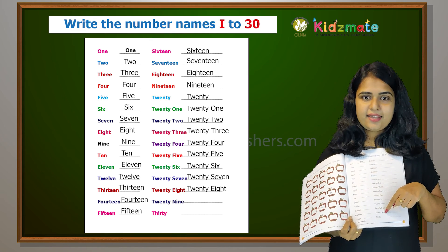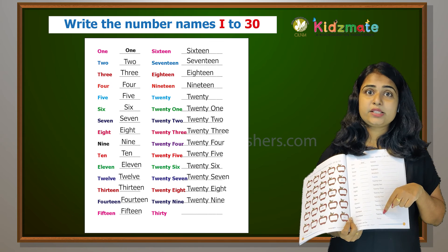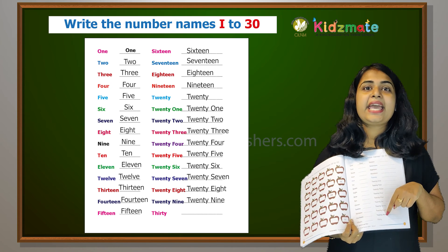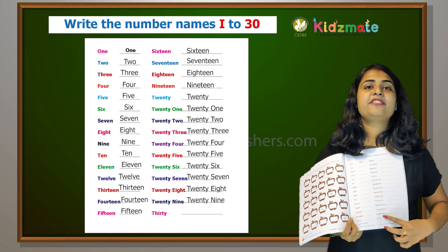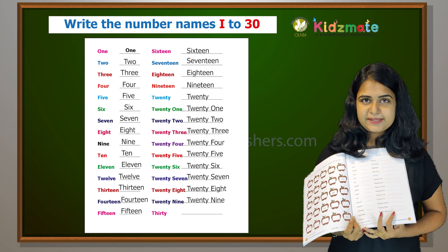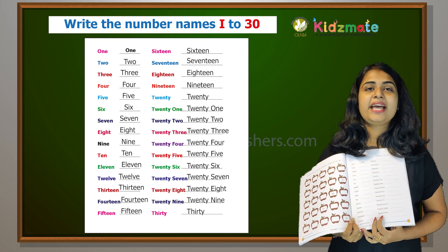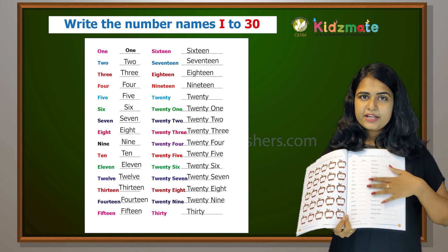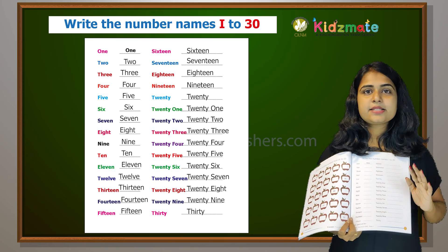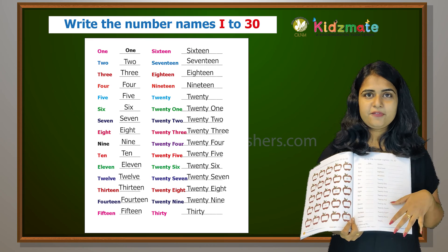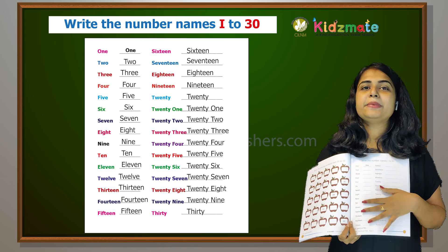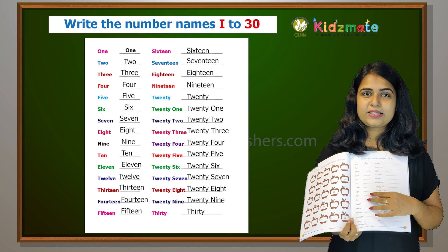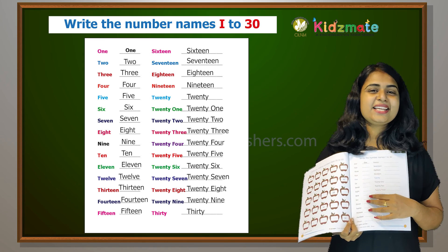Then twenty-nine, T-W-E-N-T-Y and N-I-N-E, twenty-nine. And then finally, thirty, the spelling is T-H-I-R-T-Y, thirty. Thank you so much.